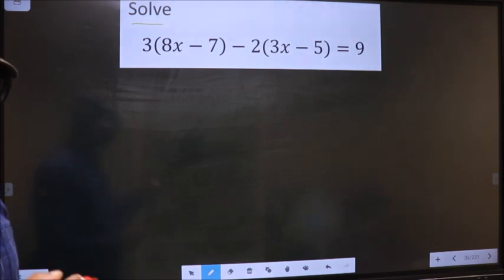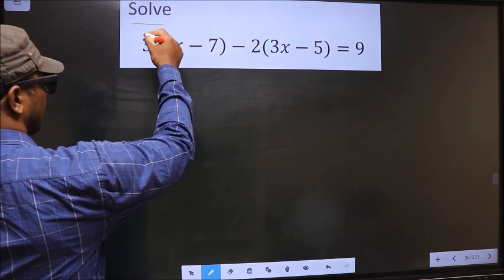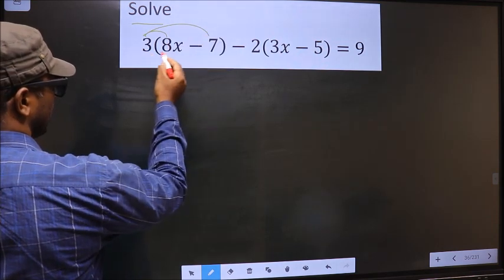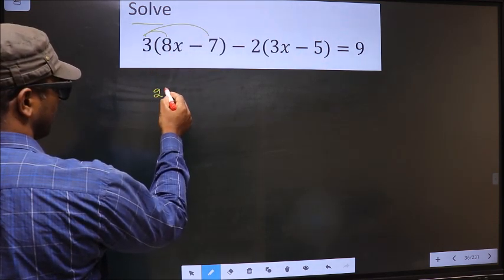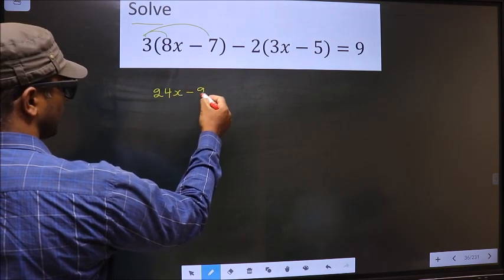For that, first we should open up the brackets in this way. So 3 into 8x is 24x minus 3 into 7 is 21.